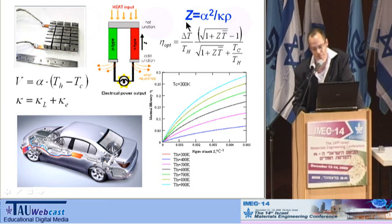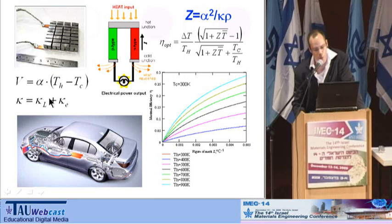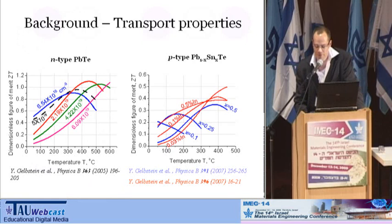One very interesting approach to enhance this ZT value is through the thermal conductivity. The thermal conductivity is usually composed of two contributions: the lattice thermal conductivity and the electronic thermal conductivity. Due to the fact that the phonon mean free path is two orders of magnitude lower than that of the electrons, on the order of 10⁻⁸ meters, which is similar to a nanometer, if we use nanopatterns for scattering of phonons inside our materials, we have a chance to enhance ZT without adversely affecting the electronic properties. I will show you briefly what we managed to do during the past few years and then the latest results.